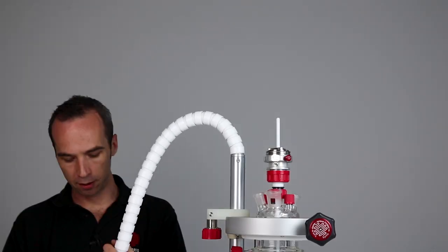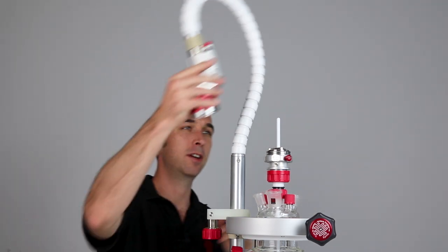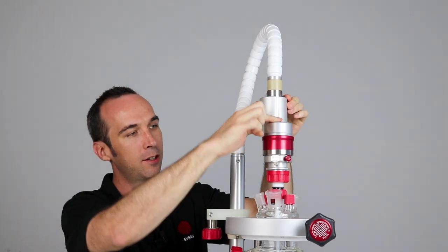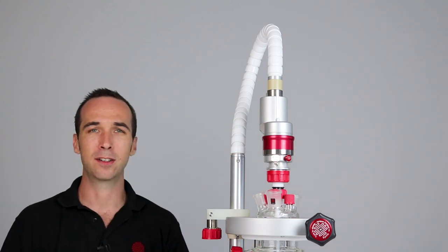Our self-aligning stir-sealing guide and motor allow you to focus on your chemistry rather than worrying about aligning your stirrer. Simply attach the stirrer to the stirrer sealing guide for a perfectly aligned stirrer every time.